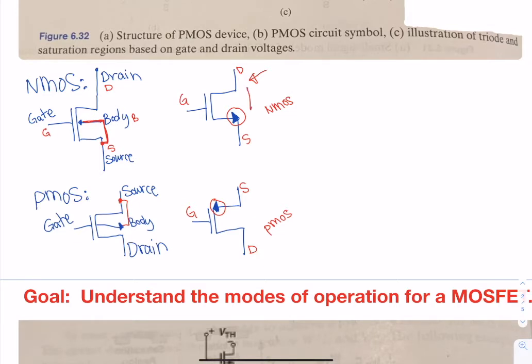The current flow for the NMOS again goes from drain to source. One thing that is unique for these is that your gate current will always be zero. For both of these, you're going to have your gate current is going to be zero.